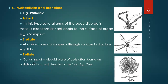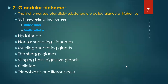The peltate type consists of a shield-like plate of cells, often borne on a stalk or attached directly at the foot. For example, in Olea europaea. This is the example of the peltate type of trichome present in Olea.